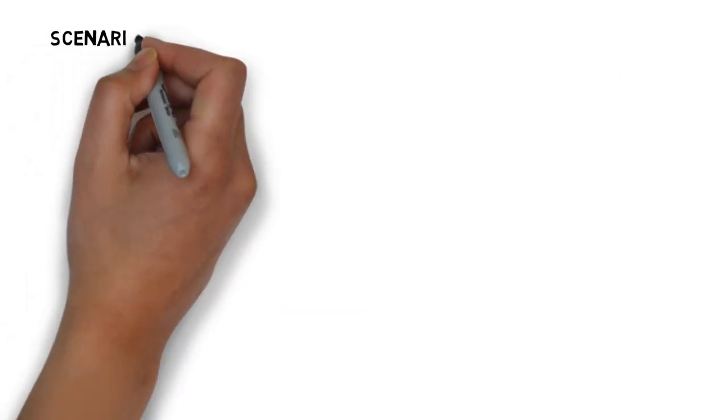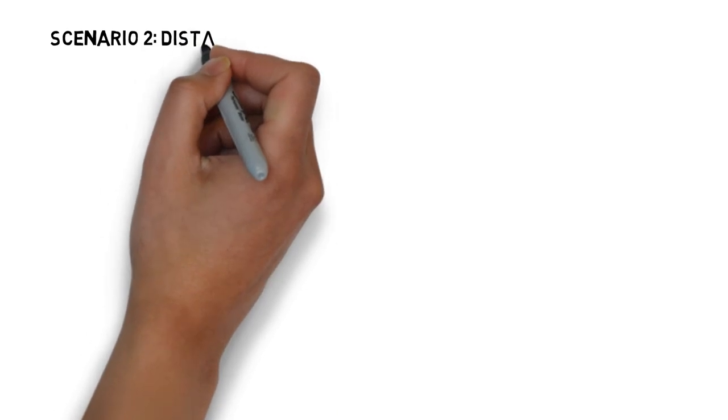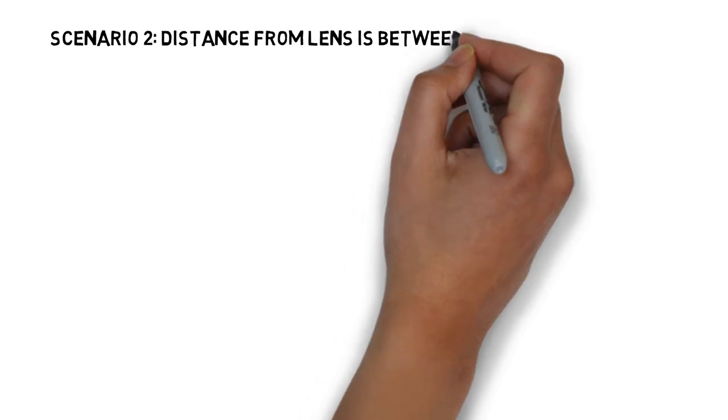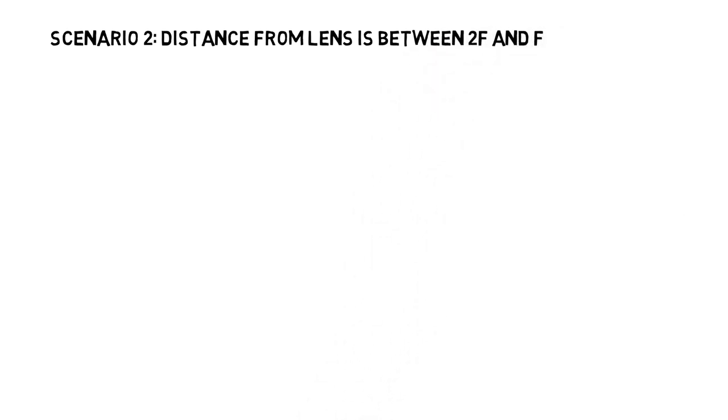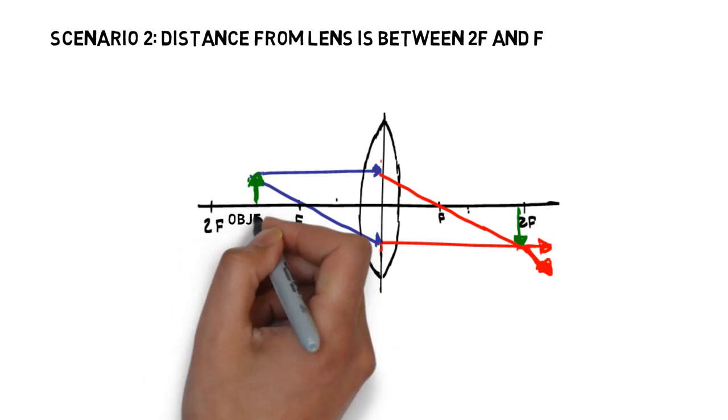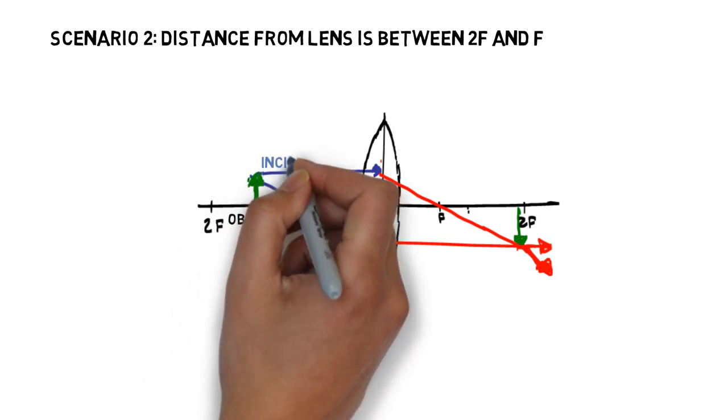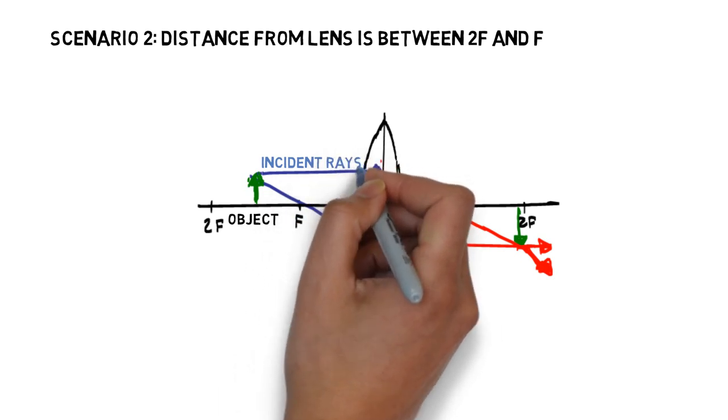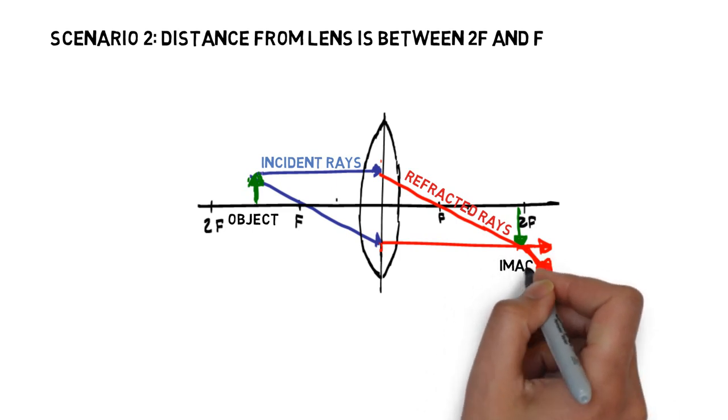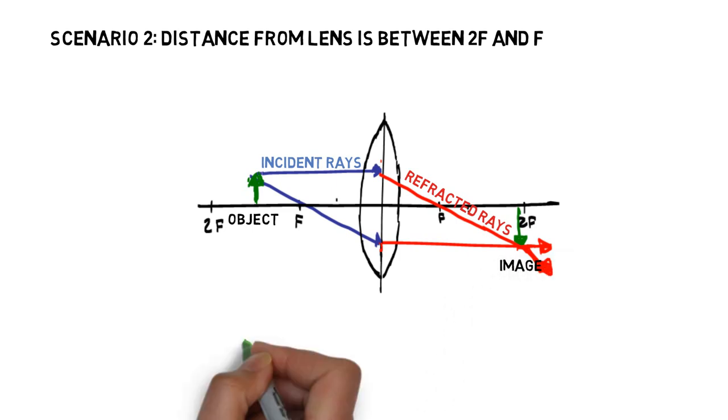Now let's move on to our second scenario, where the object distance is between 2F and F. Once again, the ray diagram is labeled with object, incident rays, refracted rays, and the resulting image. In this scenario, the image is real, inverted, and enlarged in magnification.